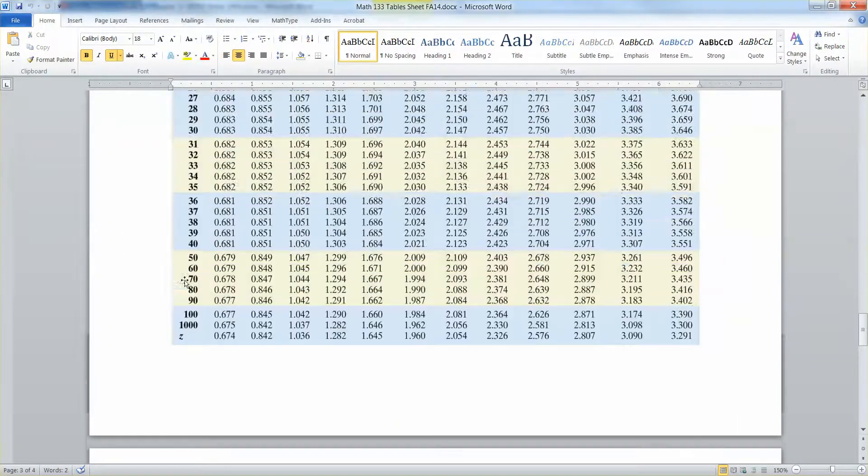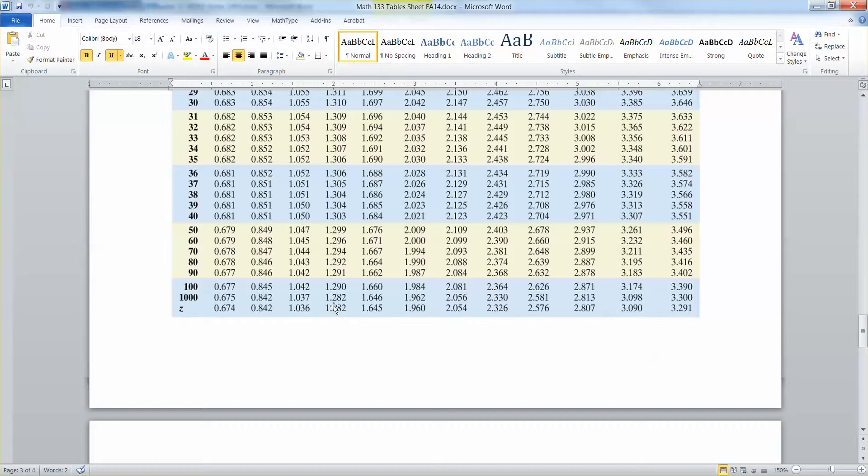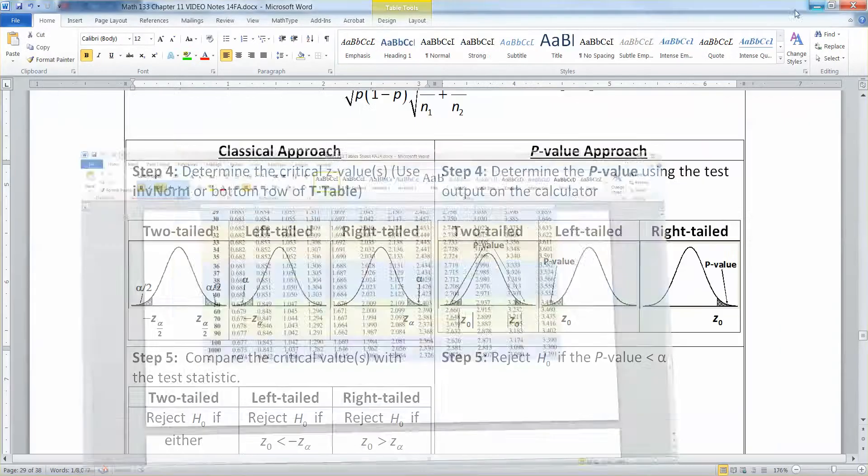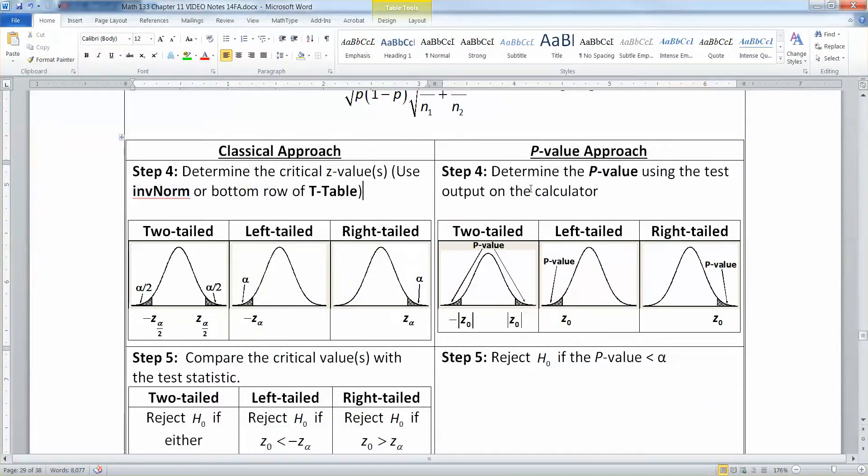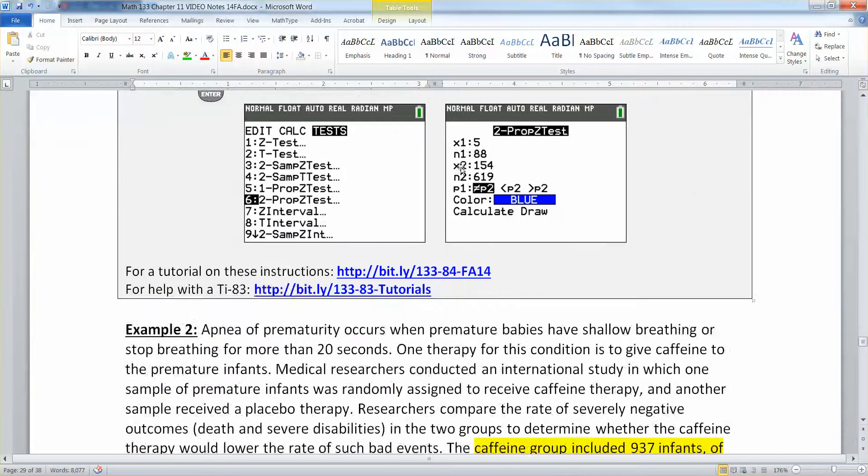Never forget that the bottom row of the t-table, here's the t-table, very bottom row is some z values. It's not all the z values known to man, but it's a few of them that we use pretty often. All right, so let's run this and then that's the calculator instructions.